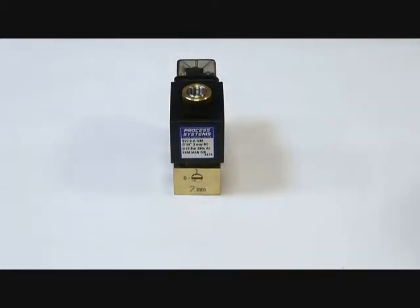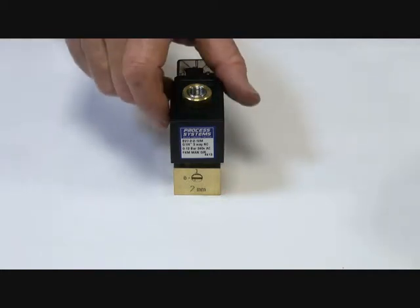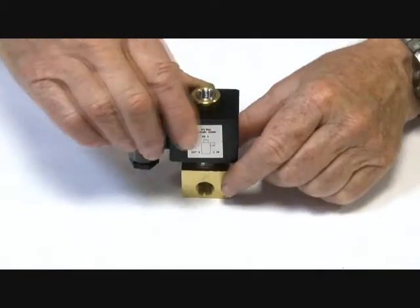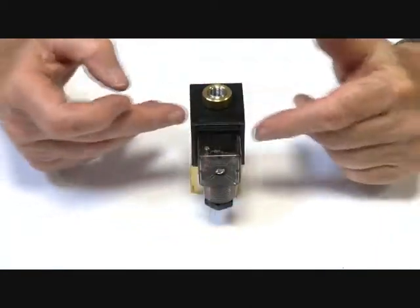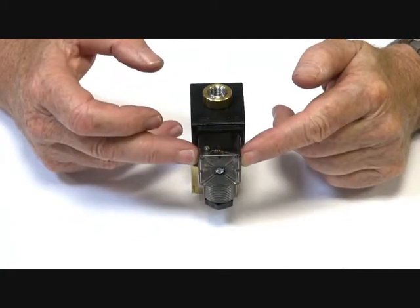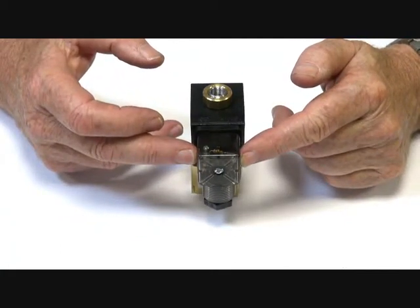B27, 3-way normally closed, 2mm orifice, quarter BSP connections, series 2. It has an IP65 coil and IP65 connector plug with LED that lights up when there's power on.